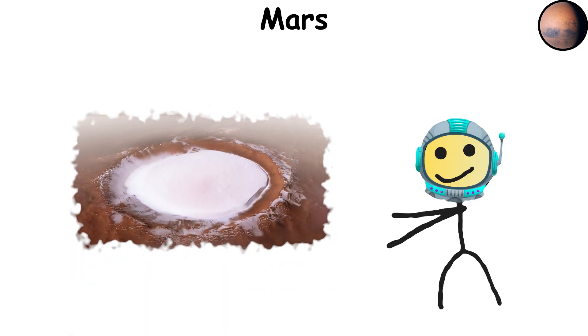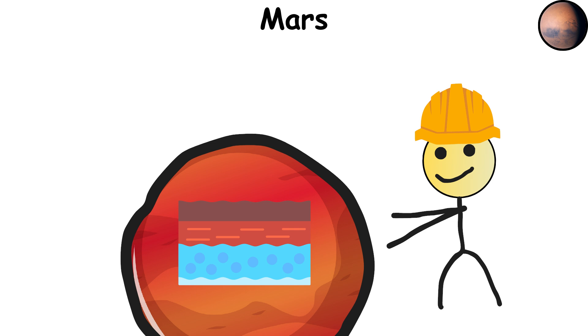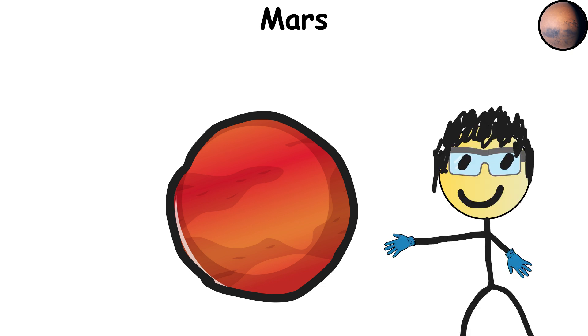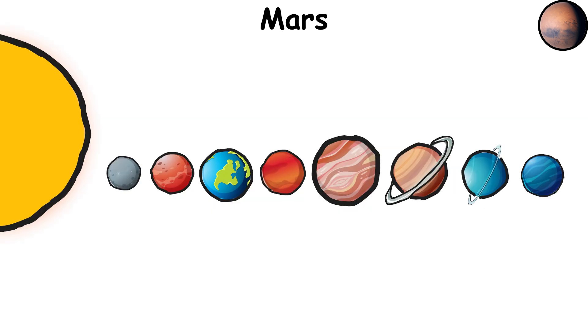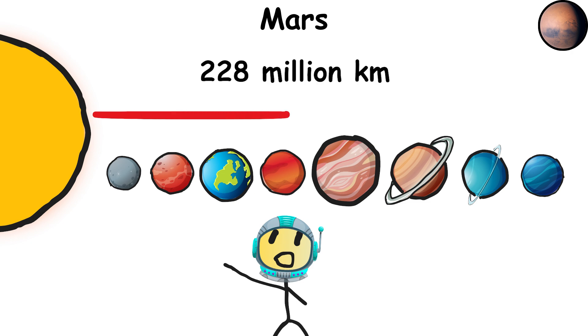Mars has some water frozen at its poles and underground, but don't expect a beach vacation anytime soon. Could life exist here? Maybe, we're still looking. Scientists are eyeing Mars as a potential future home for humans, but let's just say it needs a little renovation. Mars is 142 million miles, 228 million kilometers from the sun, so pack a jacket. It's chilly out there.